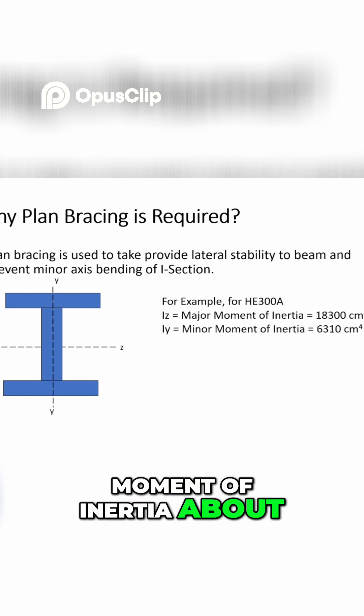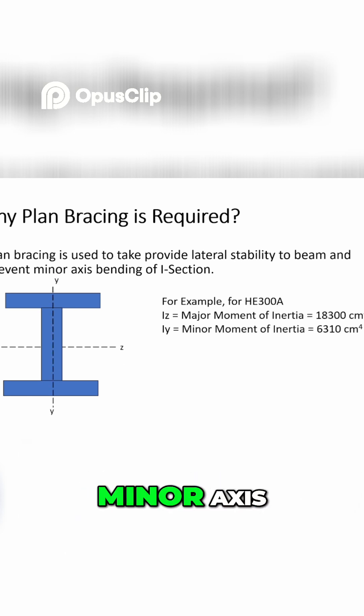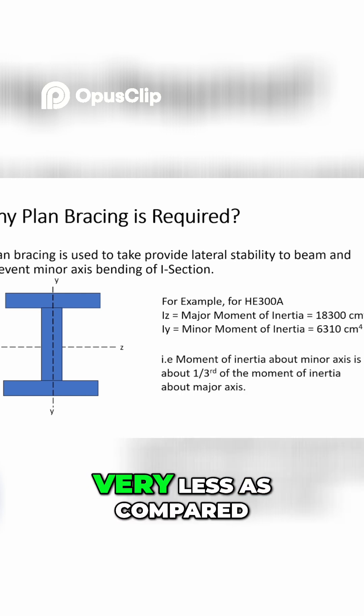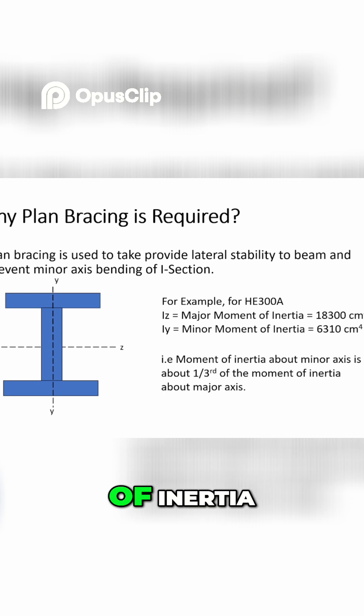To compare the moment of inertia about both axes, that is about major axis and minor axis, you can see that the minor moment of inertia is very, very less as compared to the major moment of inertia.